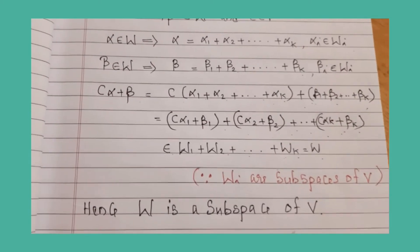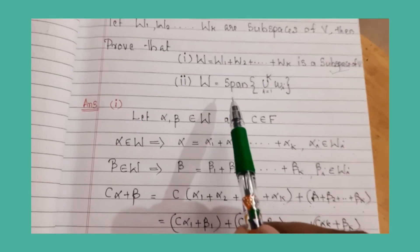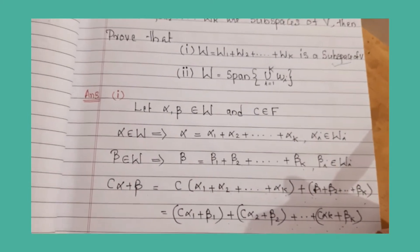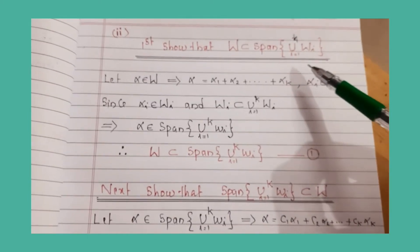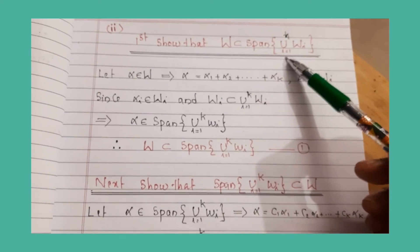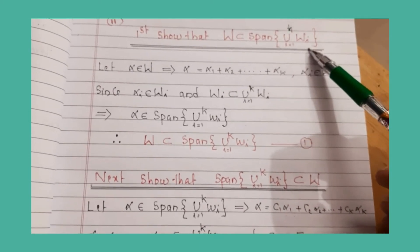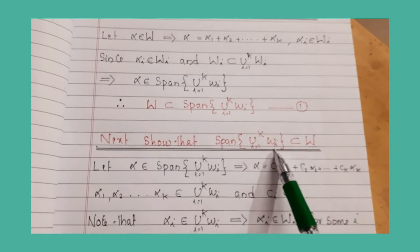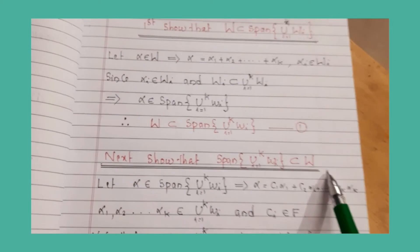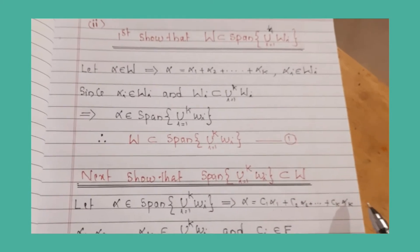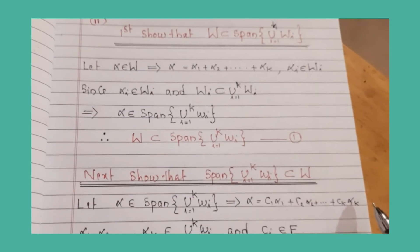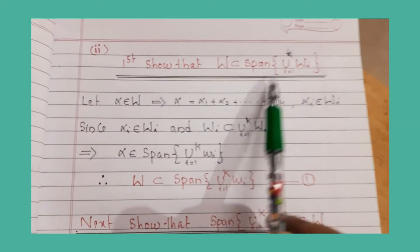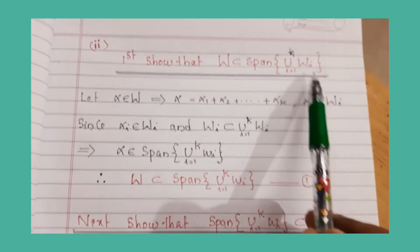For the second part, we show W = span of union Wi (i=1 to k). First, show W is a subset of span of that union. Let alpha belong to W, so alpha = alpha1 + ... + alpha k with alpha i ∈ Wi. Since alpha i ∈ Wi and Wi ⊆ union of Wj, alpha belongs to span of the union. This gives us equation A: W ⊆ span(∪Wi).